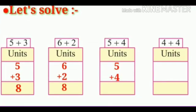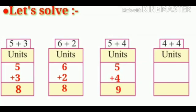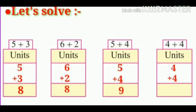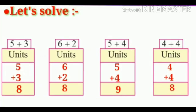Children, let's count 4 fingers forward from 5 — 6, 7, 8, 9. The answer will be 9. Next: let's count 4 fingers forward from 4 — 5, 6, 7, 8. The answer will be 8.